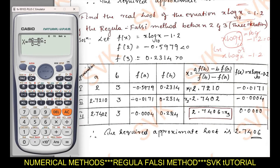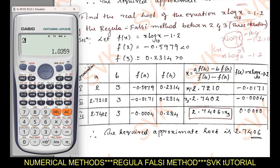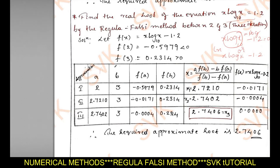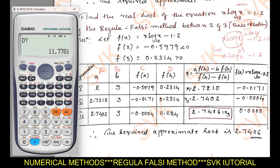After noting f(2) and f(3), use the upper joystick to retrieve the previous expression and type the new combined expression: Alpha x (the Regula Falsi formula A·D − B·C over D − C), then Alpha colon, Alpha x · log(Alpha x) − 1.2. Press Calc; enter A = 2, D = 0.2314, B = 3, C = −0.5979 to get x₁. Note x₁.